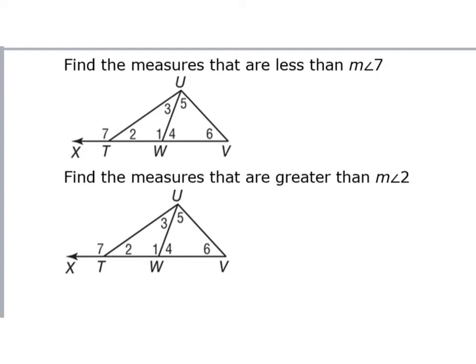Find the measures of angles that are less than angle seven. Angle seven is an exterior angle to the pink triangle, so the remote interior angles are less than the exterior angle — angle three is less than seven and angle one is less than seven. But there's more, because angle seven is also an exterior angle to the whole triangle. So angle five and angle six are also remote interior angles — angle five has to be less than angle seven and angle six has to be less than angle seven. There are four angles I can prove are less than angle seven.